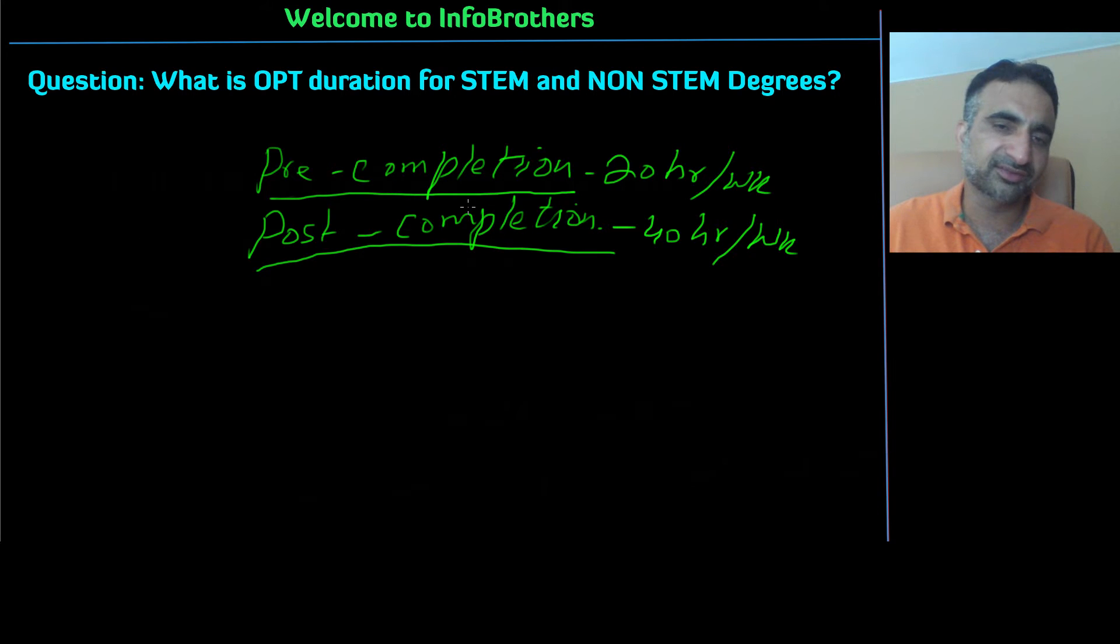So pre-completion OPT is okay when you are a student, you are working on your studies and you get some internship. But I recommend using the CPT instead of OPT while you are studying because the CPT can be also nine months. So why to waste that pre-completion OPT time? When you get the CPT, you can still make the money, you can still work with the employers. And then once you are done, you try to get the post-completion OPT.